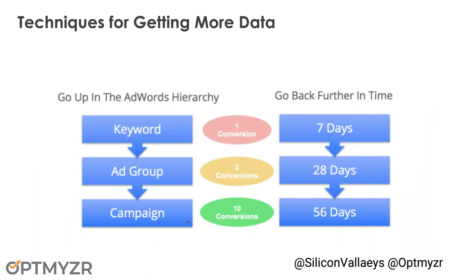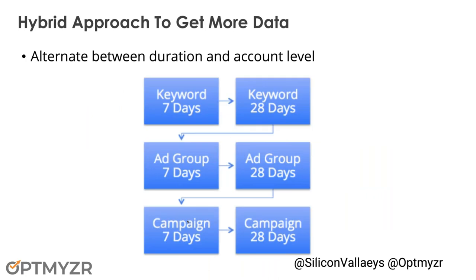The other thing we look at is if you need to get more conversions, there are hierarchies you can go up to get more data. At the keyword level you might have one conversion, but the ad group that keyword lives in might have three conversions, and the campaign that the ad group was in might have 10 conversions. Most people structure campaigns around similarities, so it's usually okay to say if this campaign has a conversion rate of X, that probably whittles down to all the keywords within that campaign. The other thing you can do is look at a longer date range — go from seven days back to 28 days back and even further until you get enough data. I like to mix and match: look at the keyword for seven days; if that doesn't have 15 conversions, go to 28 days; if I can't do that, look at the ad group for seven days, and keep jumping between those levels.